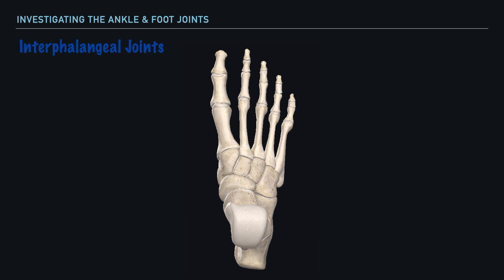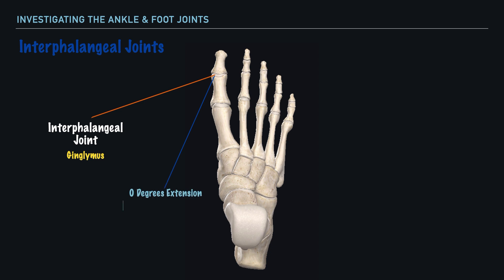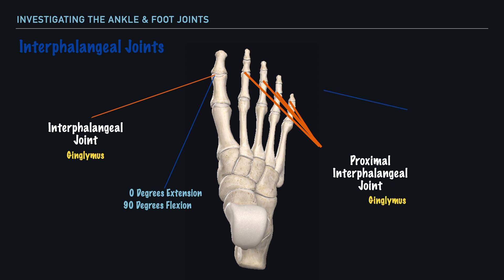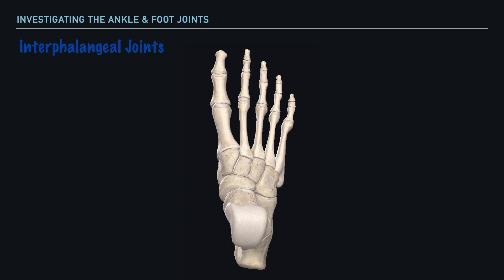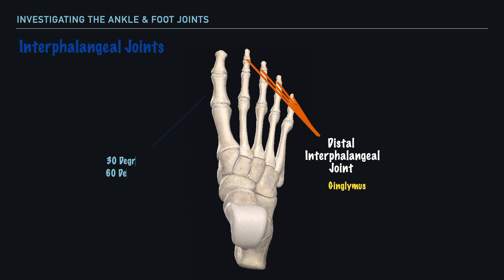The interphalangeal joint of the great toe is a ginglymus joint. It can typically maintain 0 degrees of extension and achieve up to 90 degrees of flexion. For the four lesser toes, the proximal interphalangeal joints are also ginglymus type joints, typically maintaining 0 degrees of extension and achieving up to 35 degrees of flexion. Moving to the distal interphalangeal joint, also a ginglymus type joint, it's typical to achieve 30 degrees of extension and 60 degrees of flexion — though there is a great deal of variability in motion across individuals.